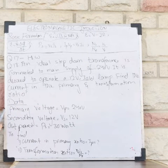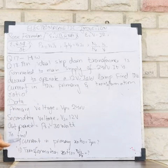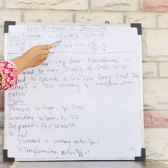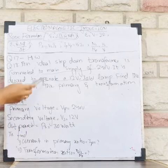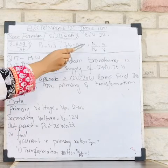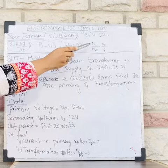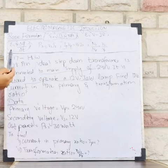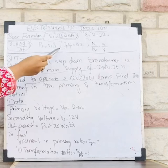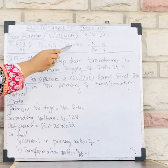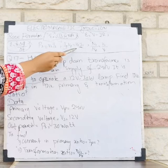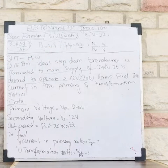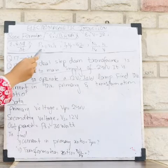I have to find two unknown variables. Looking at the formulas, one formula is suitable for calculating Ip and another is suitable for calculating the transformer ratio Ns/Np. However, I notice I don't have Is, so I need to find that first using the power formula.